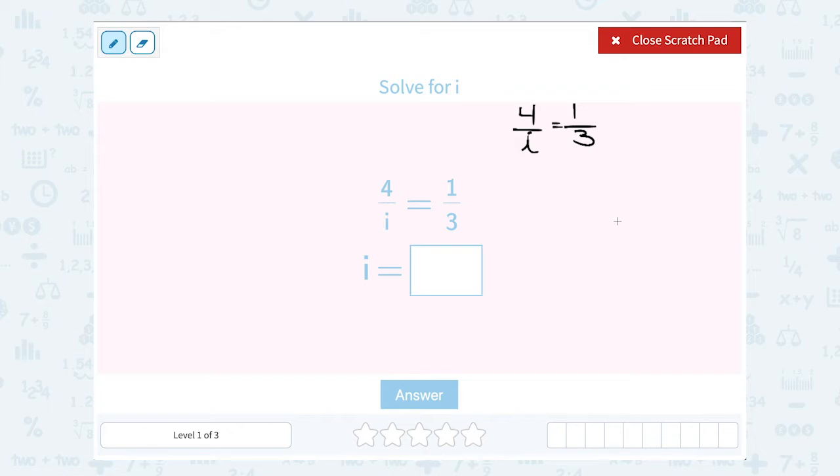If you think about this, this should make sense because when we were checking to see if ratios were in proportion, we cross multiplied, and if we got the same number, we knew they were in proportion, or equal to each other. In this case, they're telling us they're equal to each other, so we know if they cross multiply, they should be equal to the same thing.